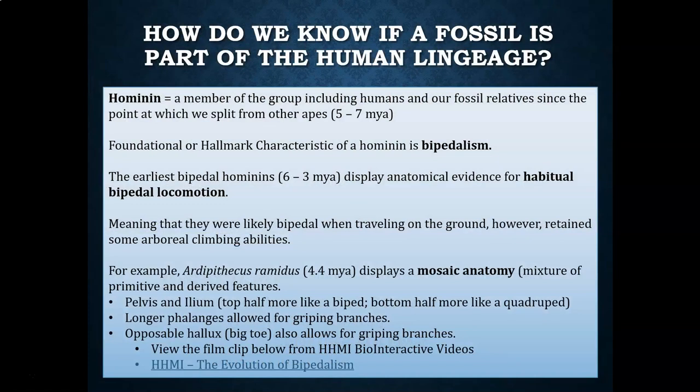Let's start by defining what it means to be a hominin. A hominin is a member of the group that includes humans and our fossil relatives since the point at which we split from the other apes. Based on genetic evidence, which we also call molecular evidence, as well as fossil evidence, it is believed that this split happened somewhere between 5 to 7 million years ago.